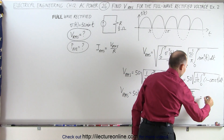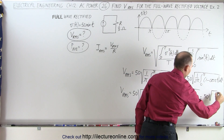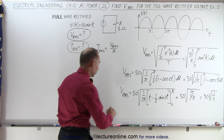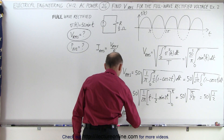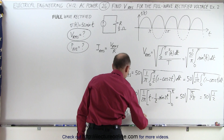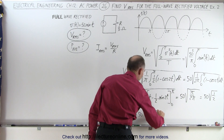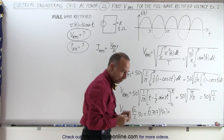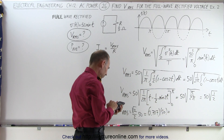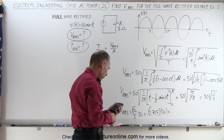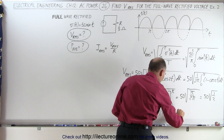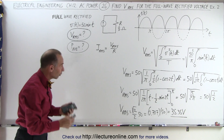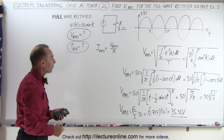The pi's cancel out, so this is equal to 50 times the square root of one half, which is the square root of two over two. That means VRMS is equal to the square root of two over two times 50, which is 0.707 times 50, giving us 35.35 volts — the RMS voltage of the fully rectified voltage source.